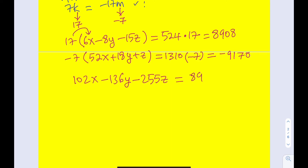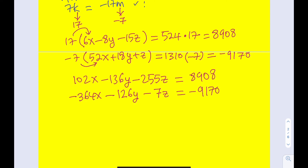Then I multiply the second equation by m, which is negative 7, distributing to get: negative 7 times 52x plus 18y plus z, and on the right-hand side, 1310 multiplied by negative 7 is negative 9,170 — if you know 13 times 7 is 91, this is straightforward. Distributing the negative 7 gives negative 364x minus 126y minus 7z equals negative 9,170. I've now manipulated both equations with constants so that when I add them I should get what I need.